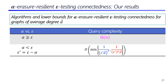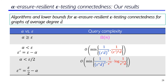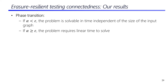When alpha is smaller than epsilon, we obtain testers whose complexity is independent of the size of the input, just as in the case of no erasures. We further show that when alpha is at most epsilon over 2, we can obtain further improvement in the query complexity. To summarize, we observe a phase transition: when alpha is at least epsilon, the complexity is linear in the size of the input representation; when alpha is smaller than epsilon, it is independent of the input size.